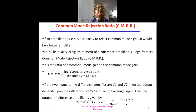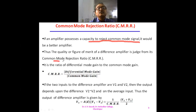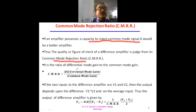Then we will see the definition of the common mode rejection ratio, called CMRR. If an amplifier possesses the capacity to reject a common mode signal, that capacity is judged in terms of the figure of merit or quality of the difference amplifier. The quality of a difference amplifier is judged from its CMRR, which is the ratio of differential mode gain to the common mode gain.